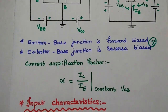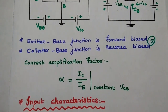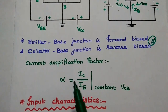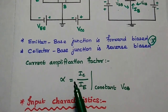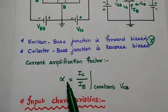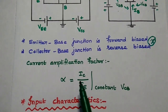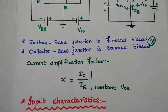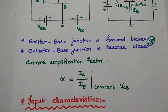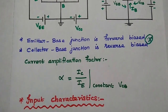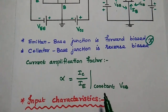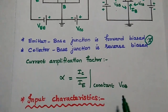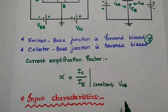The current amplification factor for common base configuration is represented as alpha, which is equal to the ratio of output current to the input current. Here, the output current is the collector current and the input current is the emitter current, with the condition that output voltage is kept constant.